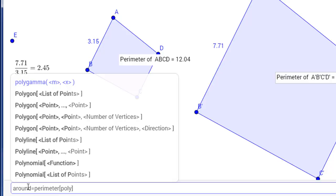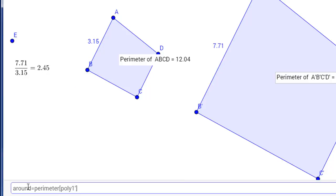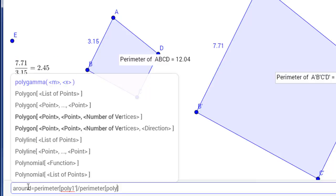And actually we want poly 1 prime, our second polygon. And we want to take that and divide it by the perimeter of poly 1.